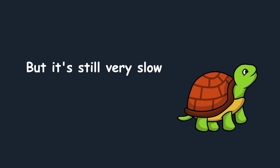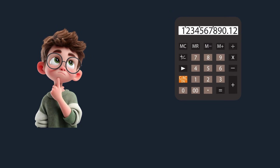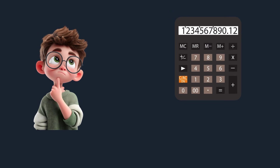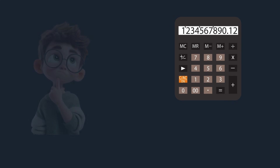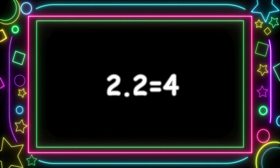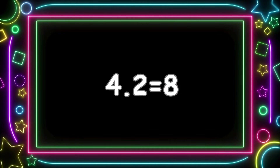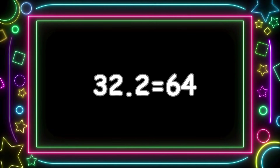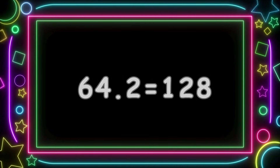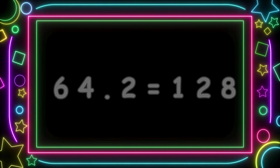But it's still very slow. And if we multiply, which is nothing more than repeated addition: 2 times 2 equals 4, 4 times 2 equals 8, 8 times 2 equals 16, 32, 64, 128, and so on. That's already better, but we can still grow faster.